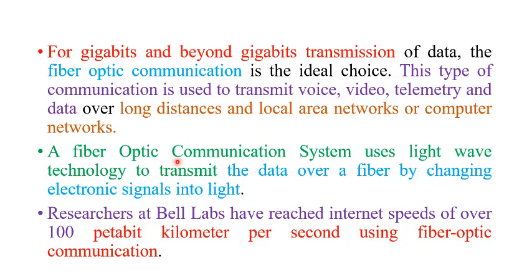A fiber optic communication system uses light wave technology to transmit data over a fiber by changing electronic signals into light. Researchers at Bell Laboratory have demonstrated internet speeds of over 100 petabit-kilometers per second using fiber optical communication. With the help of OFC — optical fiber communication — high speed data transmission can be achieved.